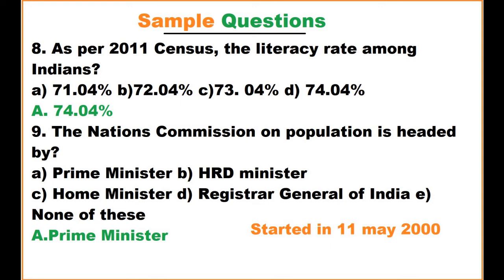The nation's Commission on Population is headed by whom? The options are Prime Minister, HRD Minister, Home Minister, and Registrar General of India. The answer is the Prime Minister. The National Commission on Population was started on 11th May 2000.